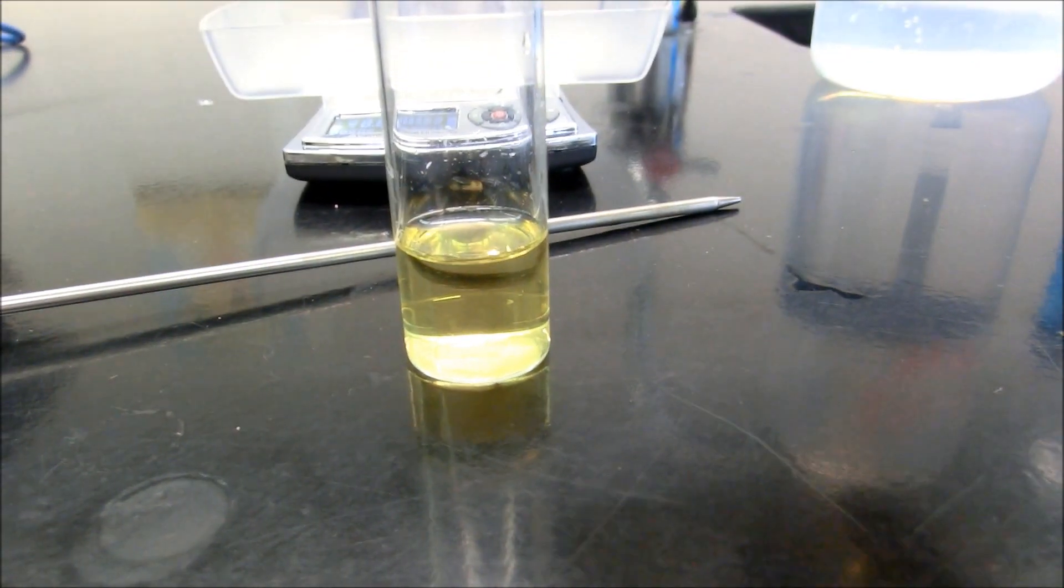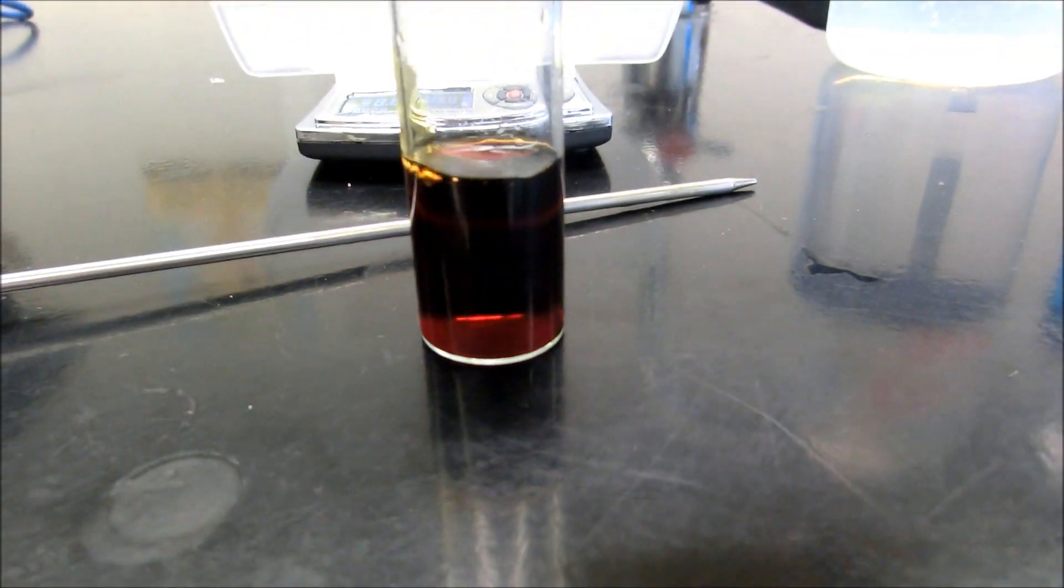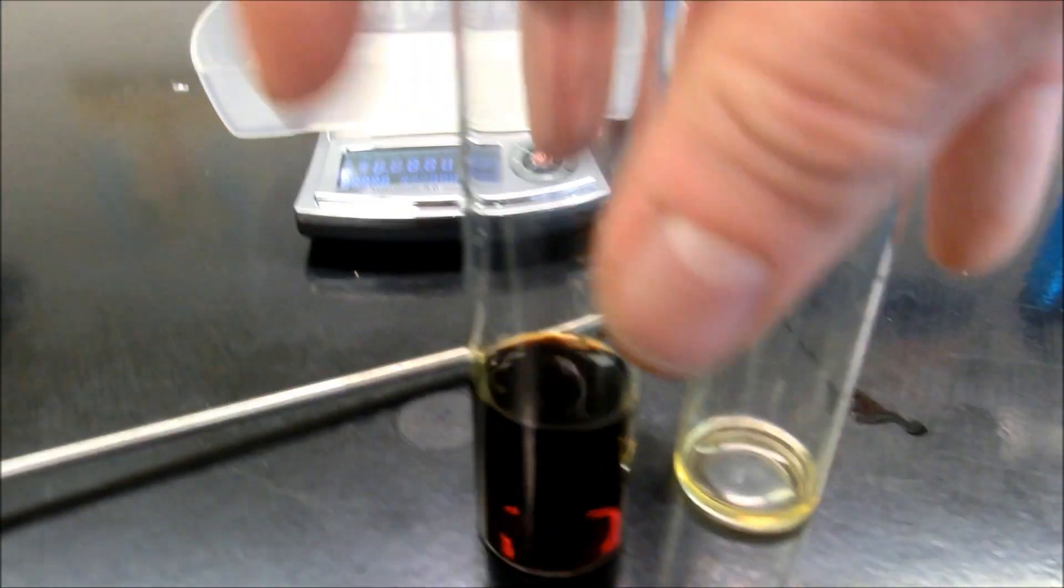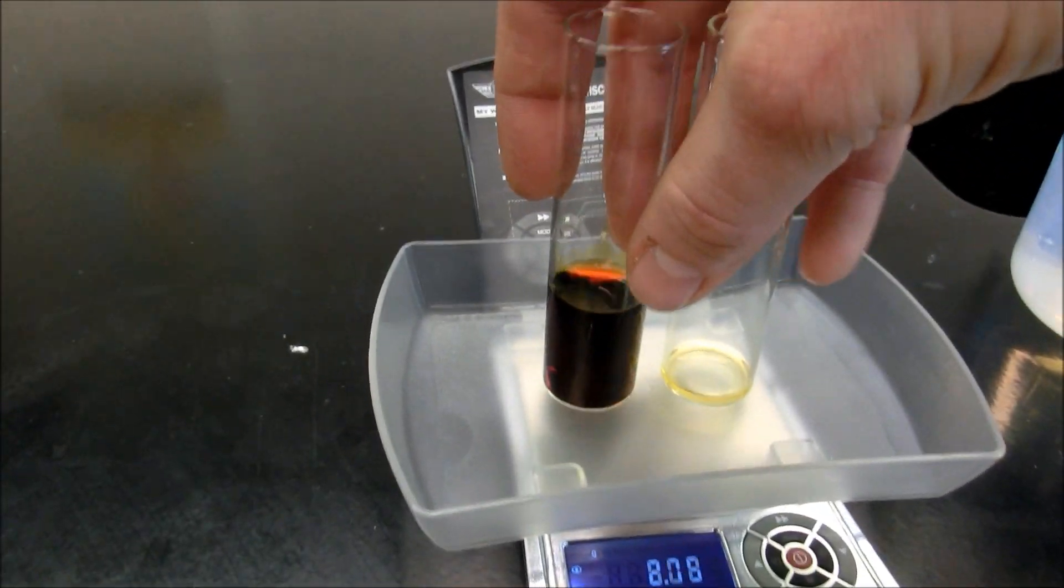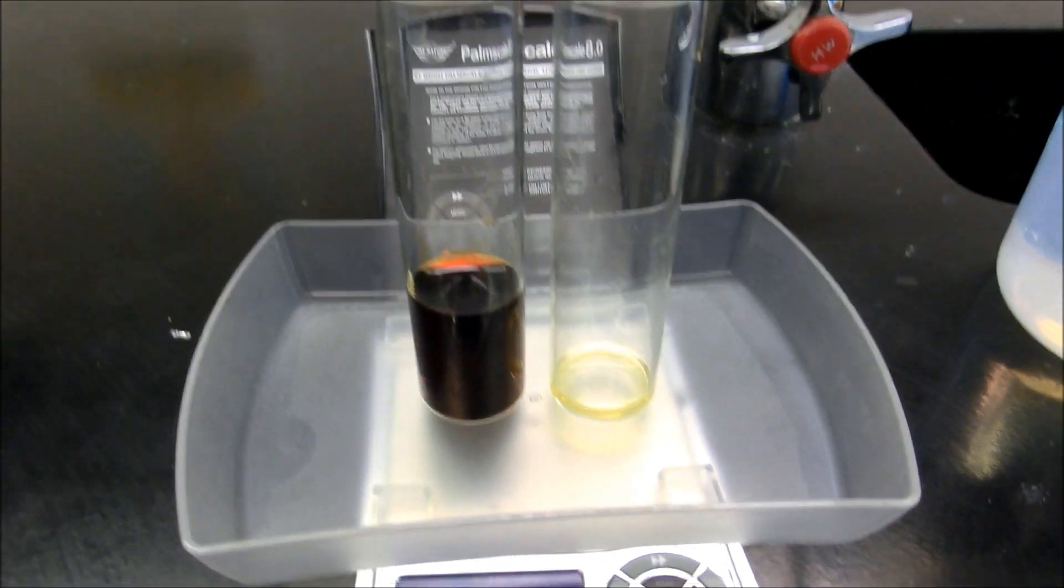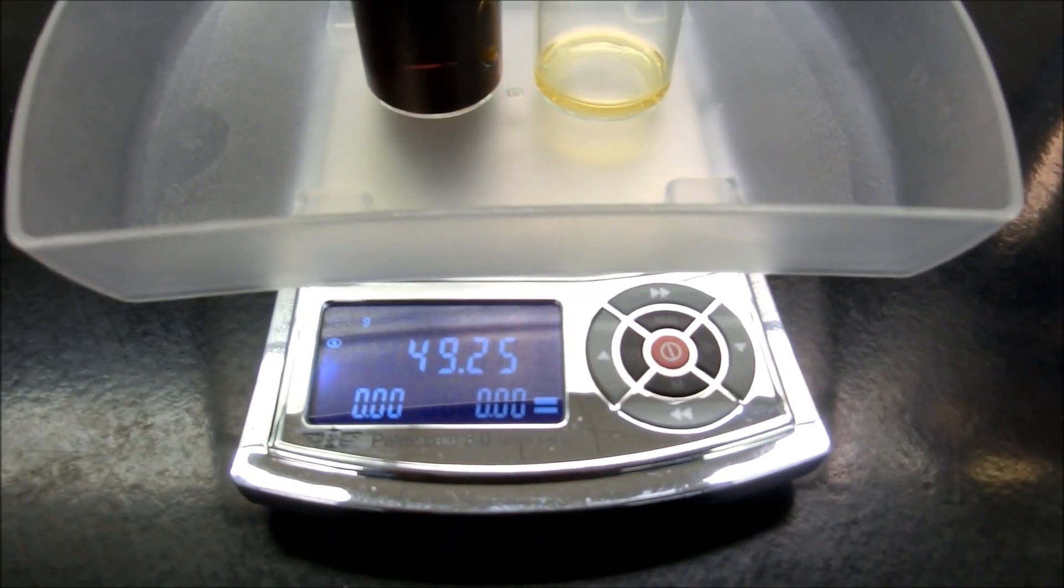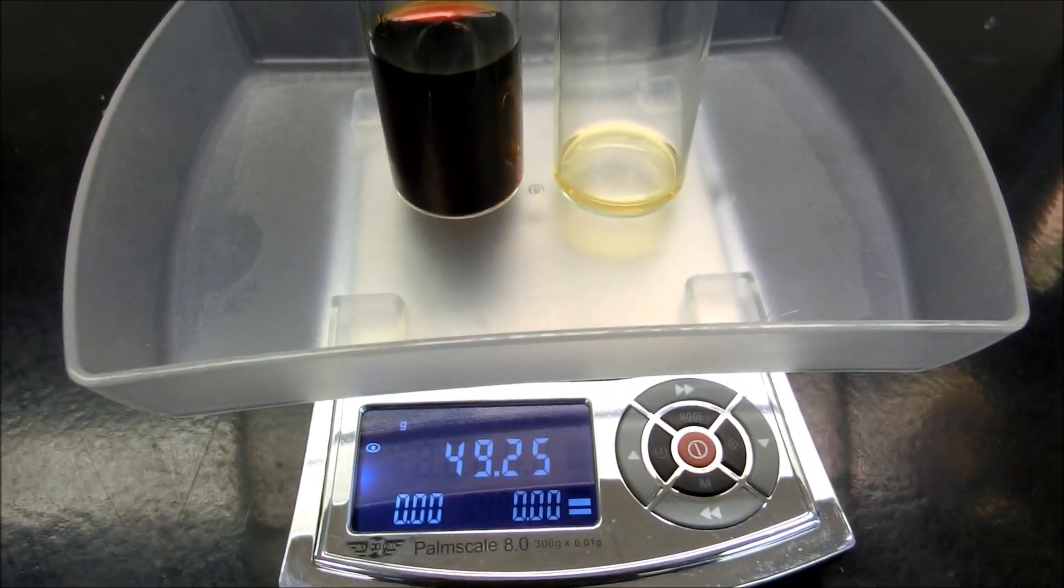Taking a look. I'm going to pour the iron nitrate. And we get that really dark, rich red color. There does not appear to be any solid in the bottom of that though. And we now have a mass of 49.25 grams.